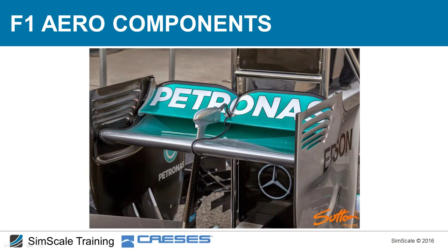The shape at the rear is the DRS — Drag Reduction System — actuator. The DRS works by adjusting the angle of the second element (the flap). When closed, the rear wing generates maximum downforce. When opened, downforce reduces, but the car's speed increases significantly because drag from the rear wing is reduced.